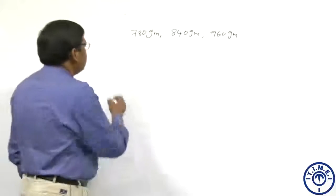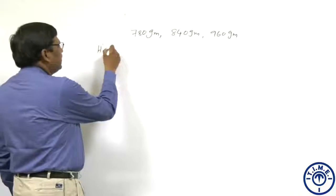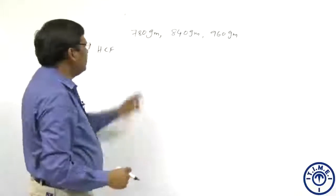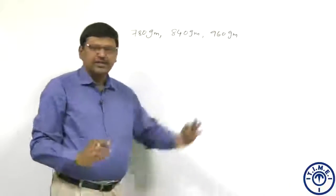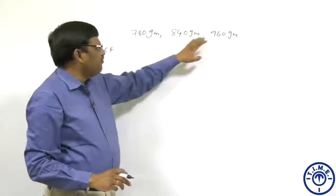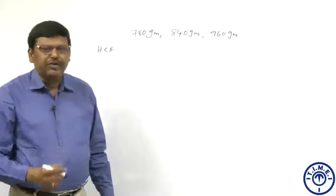In other words, we have to find HCF. So what is the HCF of them? You know, zero is common, so 10 is common. 78, 84, 96. It always helps to be good in tables.